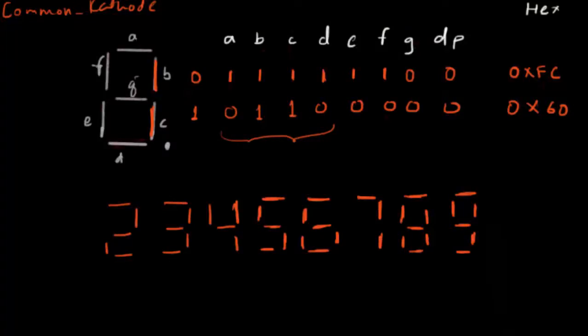In the previous video we covered the basics of how to generate patterns for a common cathode display. In this tutorial we'll be interfacing a seven-segment display with the AVR microcontroller and programming it to display the digits zero to nine and also A, B, C, D, E, and F. If you haven't watched the previous video, go back and watch it to understand how these patterns and hexadecimal numbers are formed.